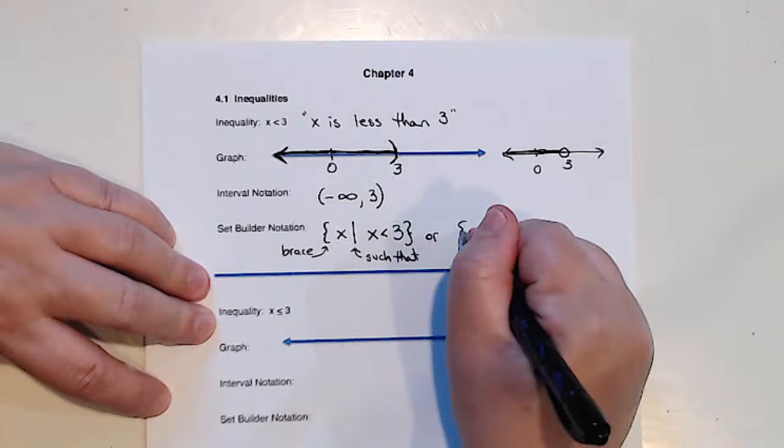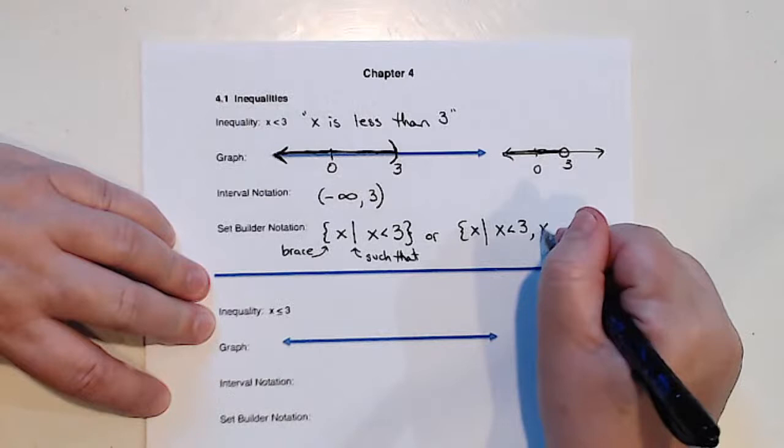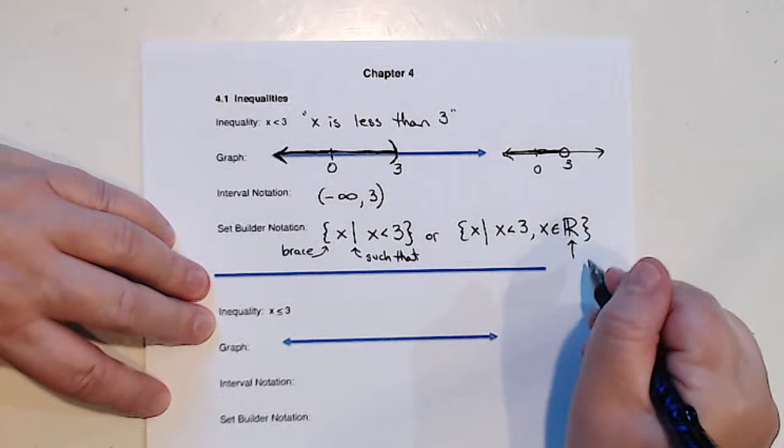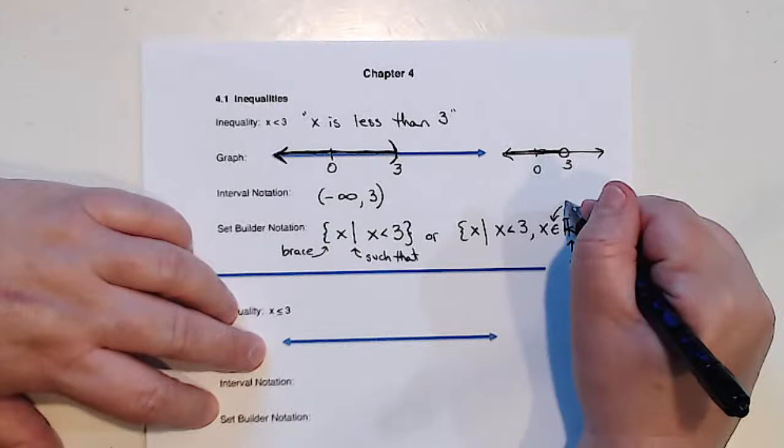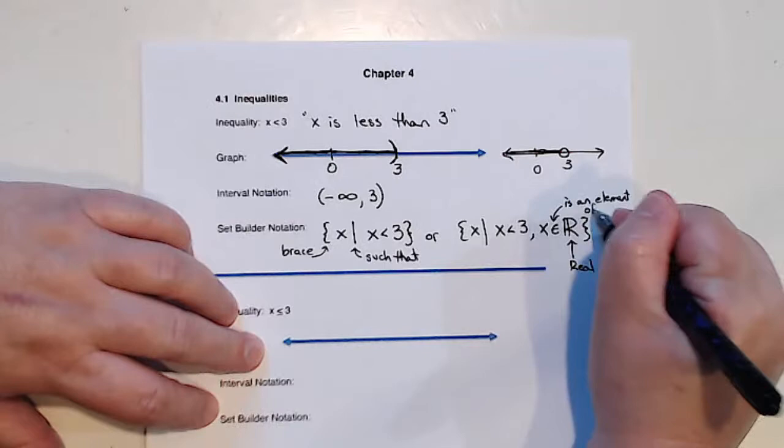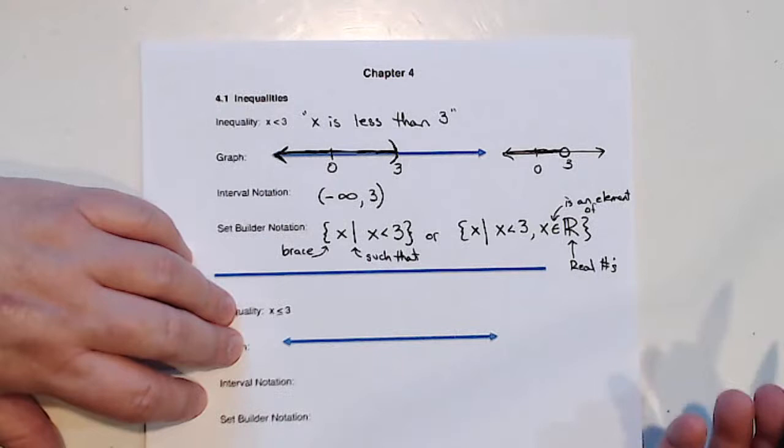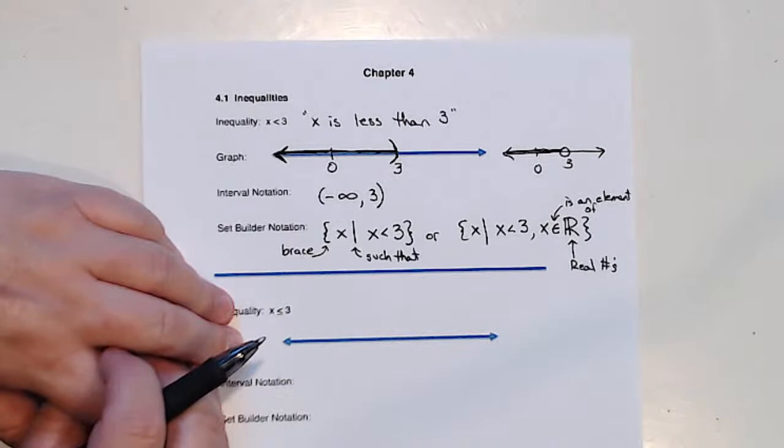Or, and here's where everybody can have their own style. Some people will also include this. I don't know if you remember this. That's the real numbers. And this little guy, can you see that right there? It looks kind of like a round, funny e. That is, is an element of. So this says x is less than 3, and x is an element of the set of real numbers. So that was the first one.